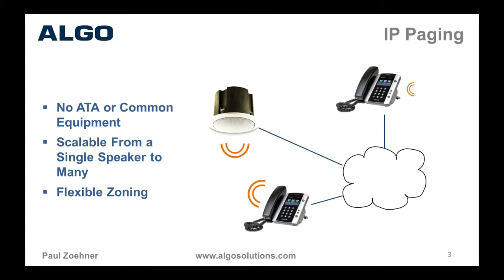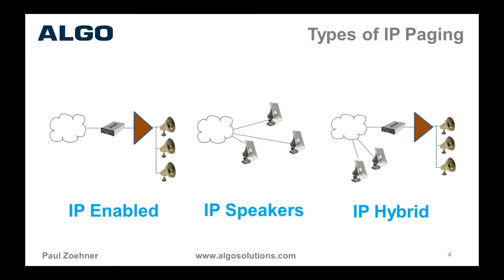I'd like to compare this to what an IP paging solution would look like. All of that complicated equipment and wiring goes away, and you can simply install one IP speaker. There's no common equipment — it's very scalable. No ATA, no telephone answering module. It could be one speaker or many speakers, and it's very flexible in zoning. It doesn't really matter where the speakers are or how you want to zone them — that can be decided later or changed at any time. IP paging is scalable and linear from one speaker to many thousands.